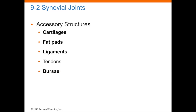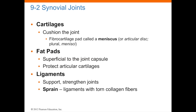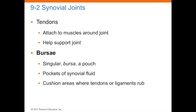The accessory structures include cartilages, fat pads, ligaments, tendons, and bursa. Cartilage helps to cushion a joint. The fibrocartilage pad in your knee is called the meniscus, which prevents bones from rubbing on top of each other as you jump, run, and walk. Fat pads are superficial to any joint capsule — they protect the articular cartilage and are filled with more adipose tissue. Ligaments support and strengthen joints; they connect bone to bone, and when you injure or sprain a joint, the ligament can tear the collagenous fibers. Tendons connect the muscles to the actual bone and help support the joint. Bursa — singular bursa — meaning a pouch, are pockets of synovial fluid that cushion areas where tendons or ligaments rub. In your knee you have multiple bursa, anywhere from 10 to 12.